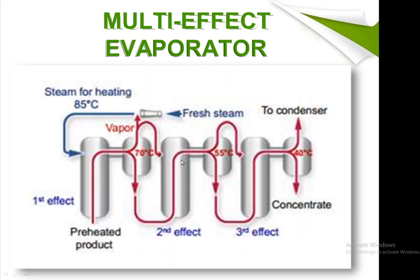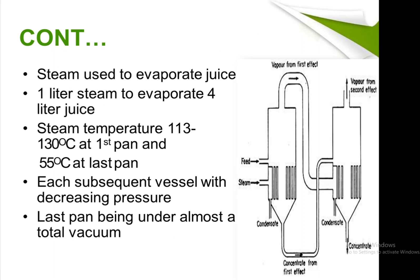Vapors are extracted from the top and feed enters the second effect, where at 55 degrees Celsius more vapors are extracted for use in the third effect. In the third effect at 40 degrees Celsius, heat is sent to a condenser and the remainder goes for concentration. Steam evaporates the juice — one liter of steam evaporates four liters of juice. Steam temperature ranges from 113 to 130 degrees Celsius at the first pan and 55 degrees Celsius at the last pan, with each subsequent vessel at decreasing pressure, the last pan under near-total vacuum.